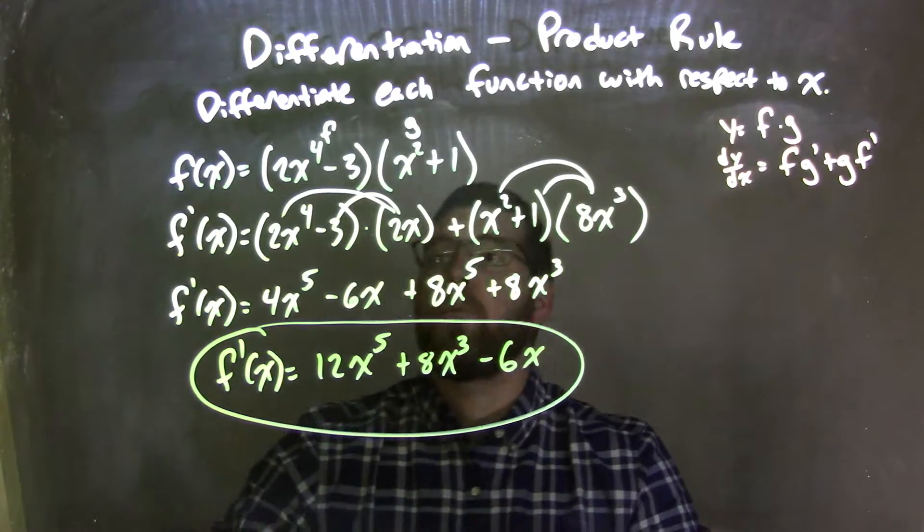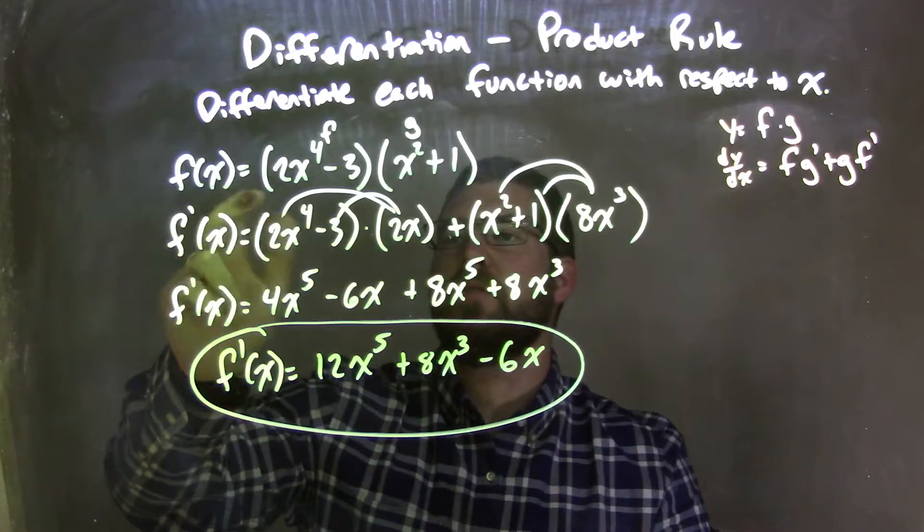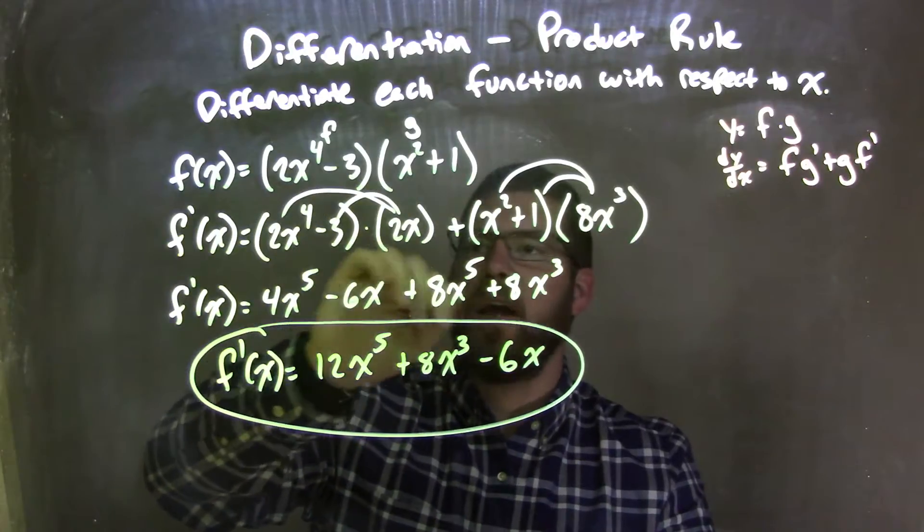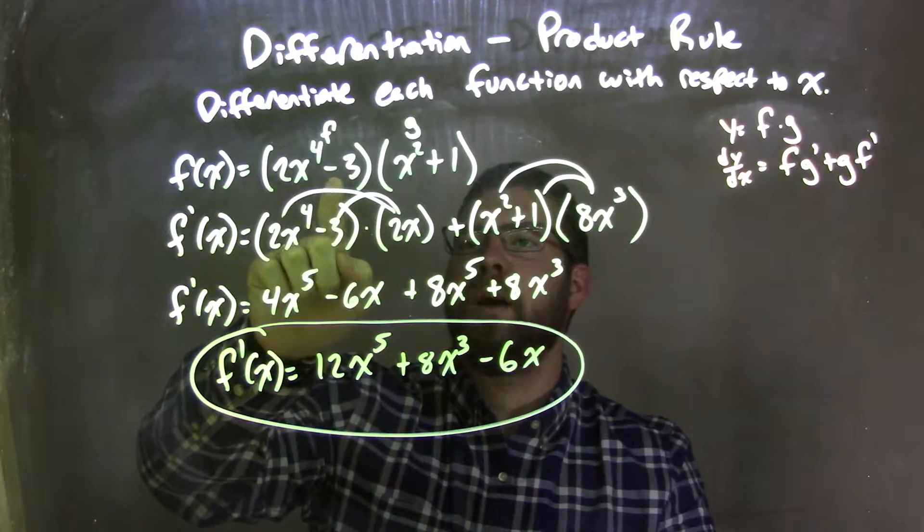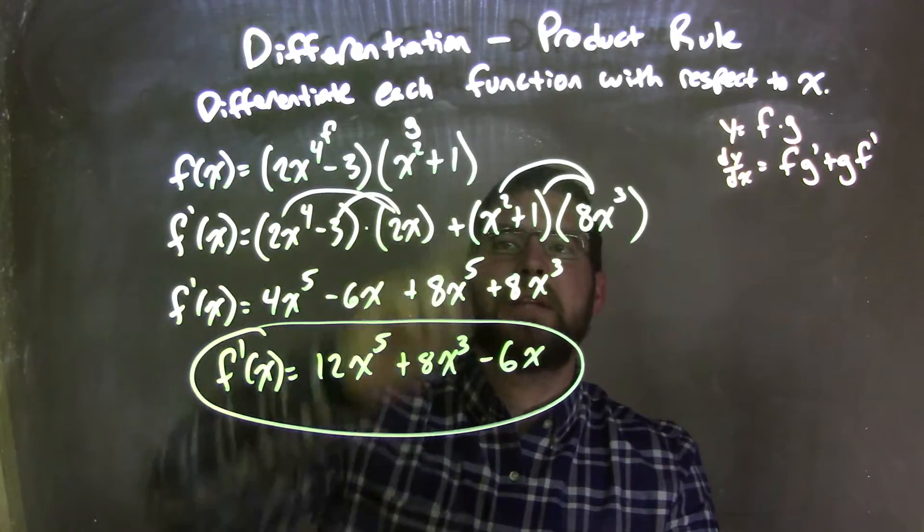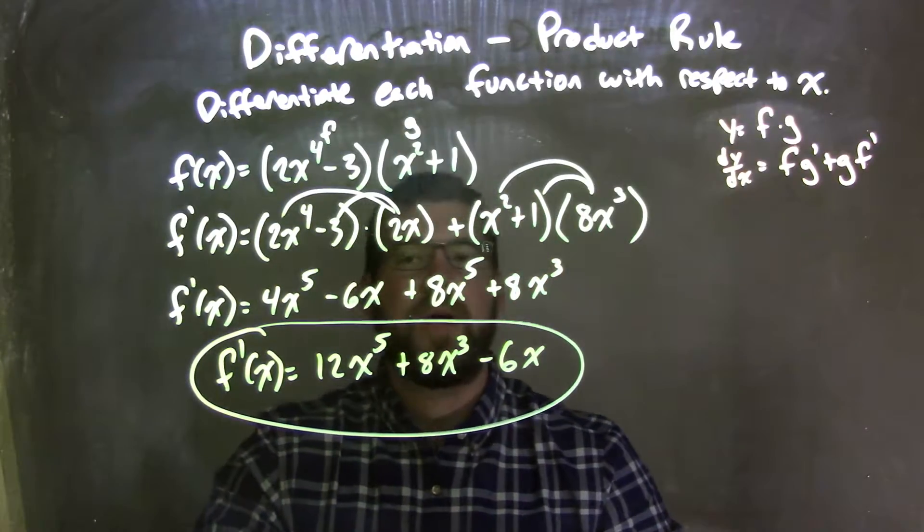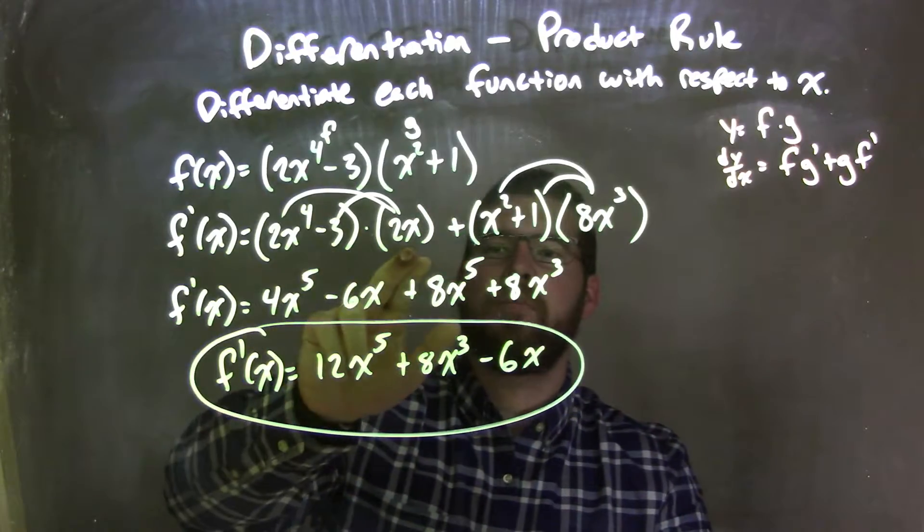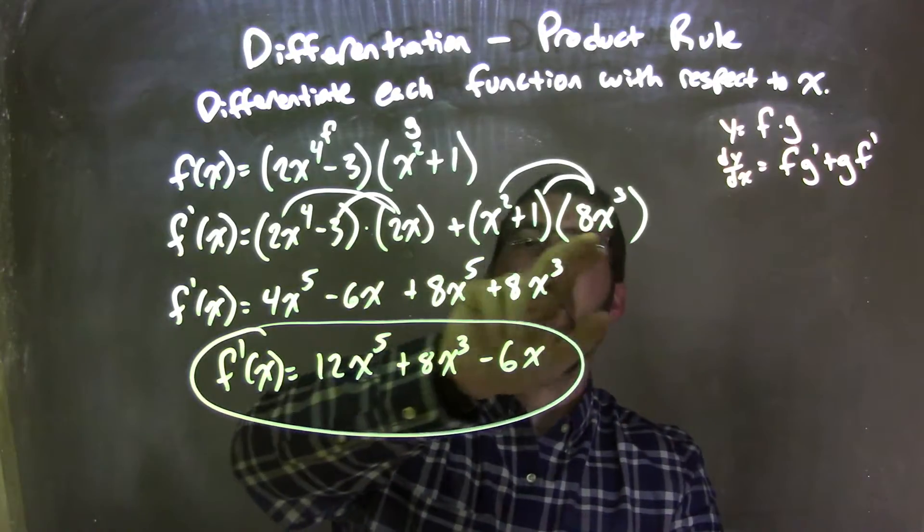So let's recap. We're given our function f of x equals, and it's two functions multiplied together. Our first one, 2x to the 4th minus 3, which we label as f, times x squared plus 1, which we label as g. We then apply the product rule, which was f times g prime plus g times f prime.